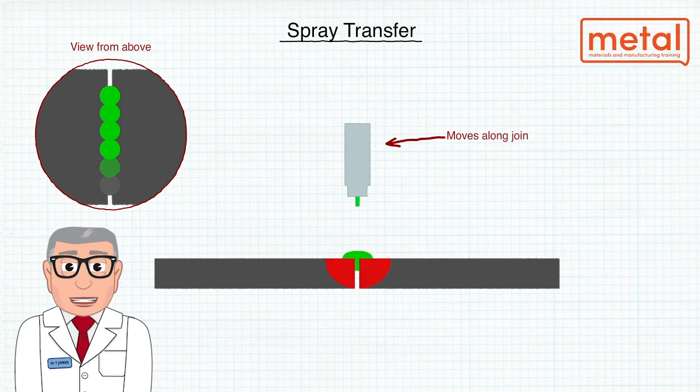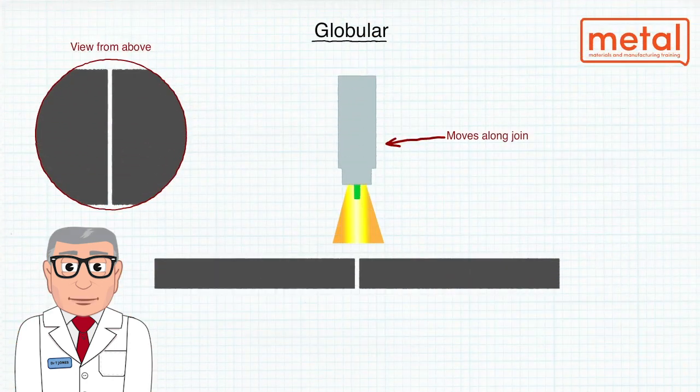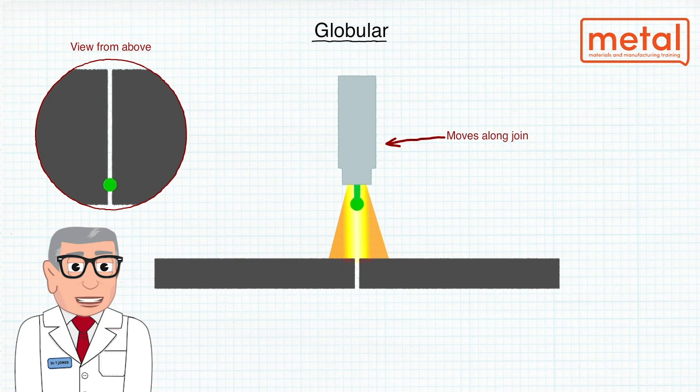At lower currents than for spray transfer, the metal transfer mode is called globular transfer. This transfer mode occurs when using a carbon dioxide shielding gas.